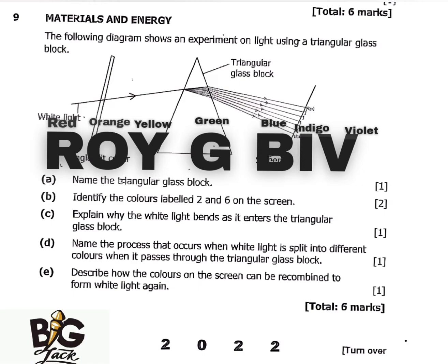The first question says: name the triangular glass block. As you can see, this one here is the prism. So I'm going to say: triangular prism, or triangular glass block, or triangular prism glass block.